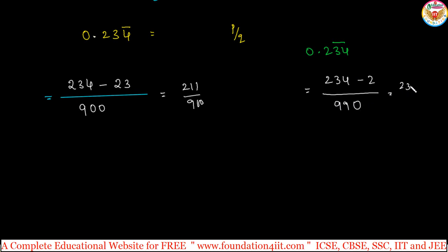This is 232 by 990. You can simplify this, 232 by 990, 2 table can cancel: 116, this is 495. So 116 by 495.